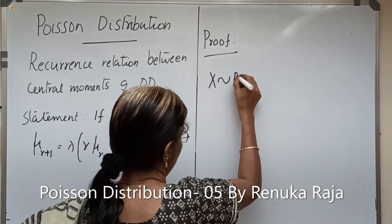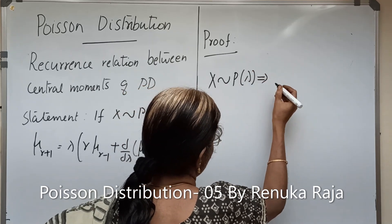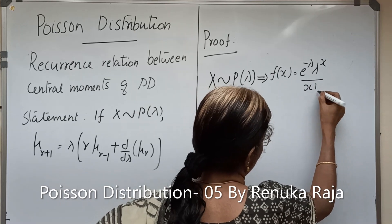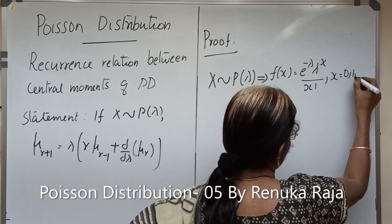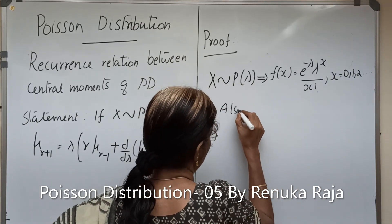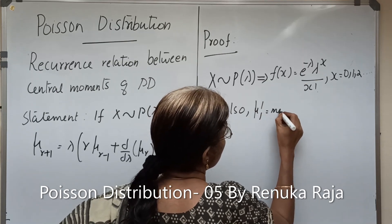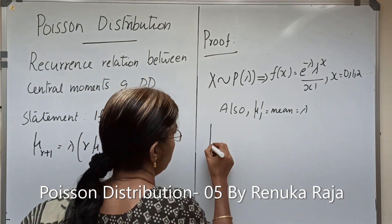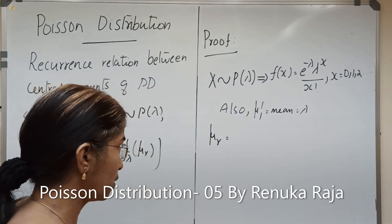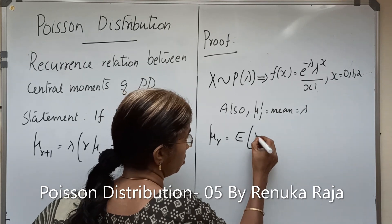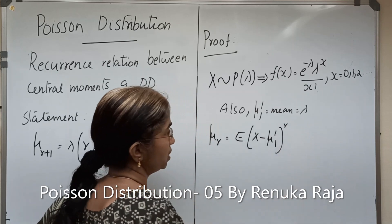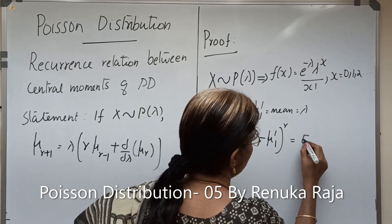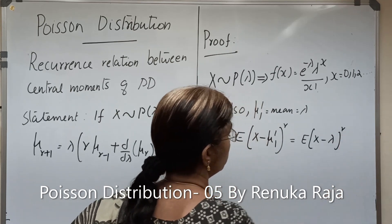For the proof, we consider X ~ P(λ), which implies f(x) = e^{-λ} · λ^x / x!, for x = 0, 1, 2, ... Also, we have μ₁' which is the mean equal to λ. Now μ_r, the r-th central moment, by definition is the expectation of (X − μ₁')^r, which equals the expectation of (X − λ)^r.